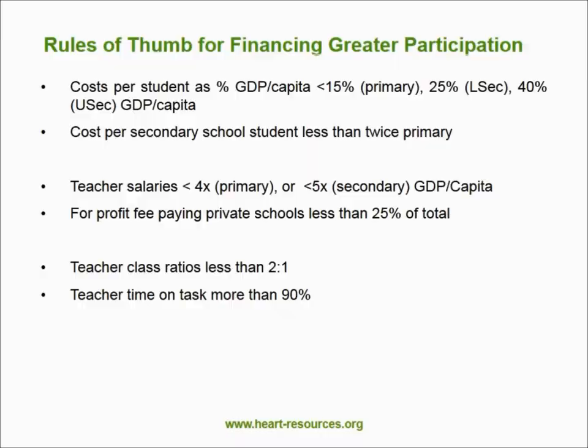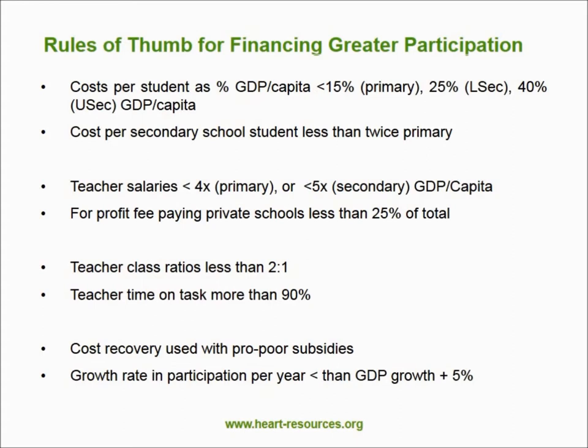Teacher-class ratios need to be less than 2 to 1. Some secondary school systems are very inefficient in the sense of having more than 2 teachers available for every class which is currently being taught. It is not only the pupil-teacher ratio that matters — it is also the teacher-class ratio that matters in terms of what is delivered and how much time teachers have on task.